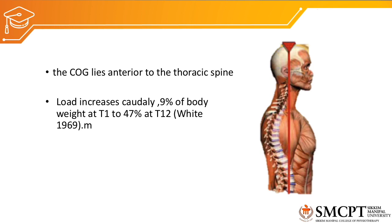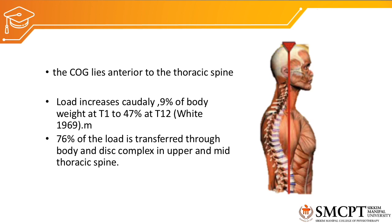The load increases caudally — 9% of the body weight is borne by T1, whereas 40% of the body weight is causing compressive force at T12. 76% of the load is transferred through the body and disc complex — that is, out of 47% of body weight at T12, 76% is transferred through the body and disc complex, whereas the remaining weight is transferred to the pillars of the vertebral spine: the apophyseal joint pillars, lamina, and pedicle.